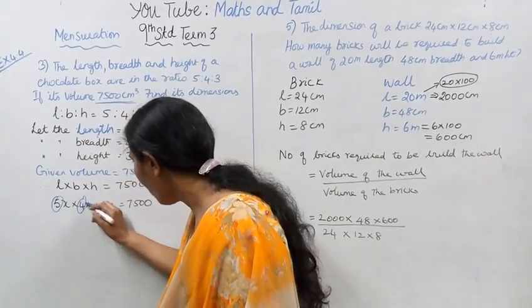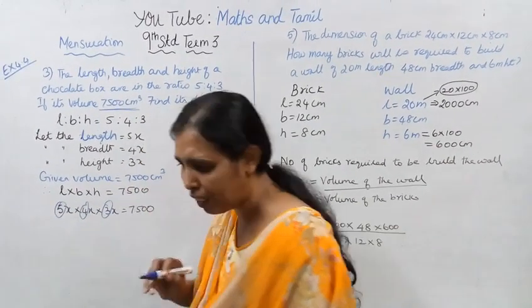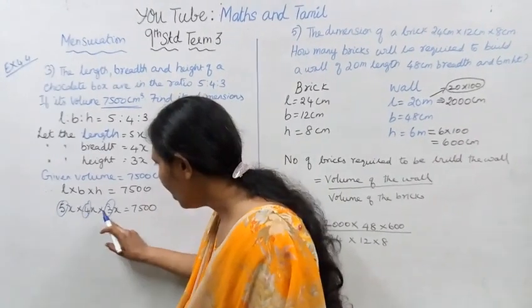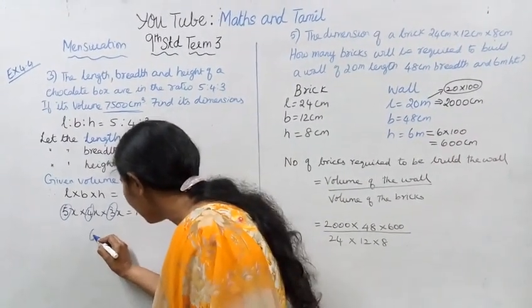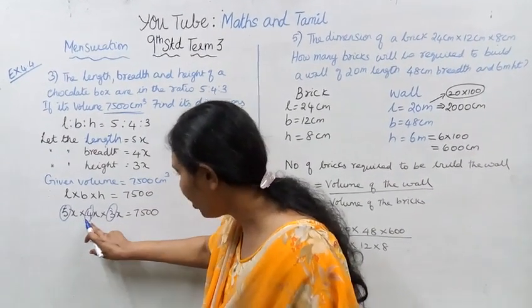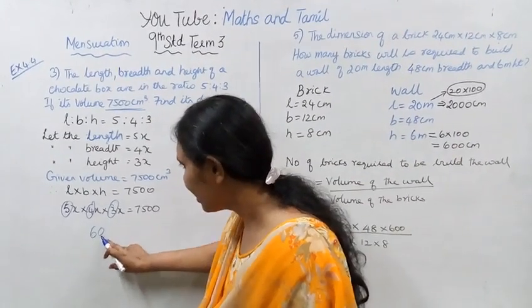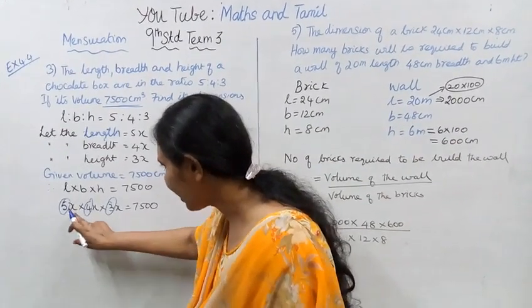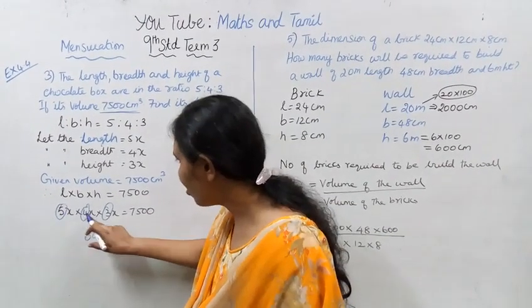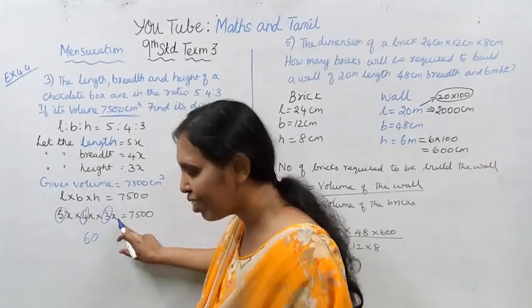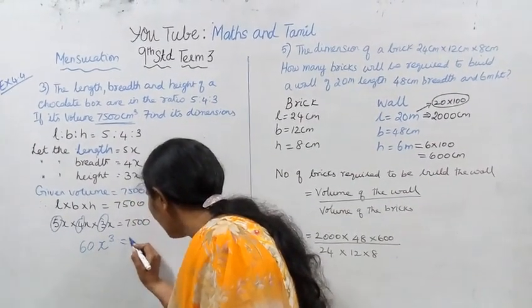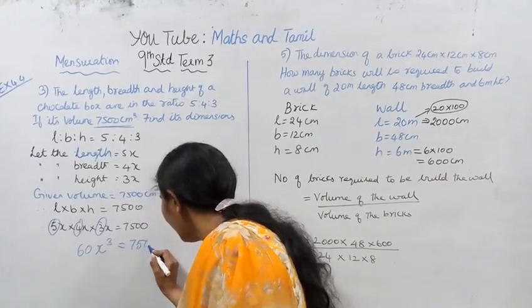Multiplying the numbers: 5 times 4 is 20, 20 times 3 is 60. For the x terms: x into x is x squared, x squared into x is x cubed. So 60x cubed equals 7500.